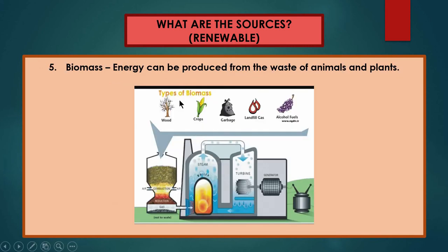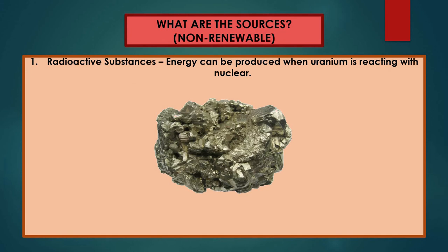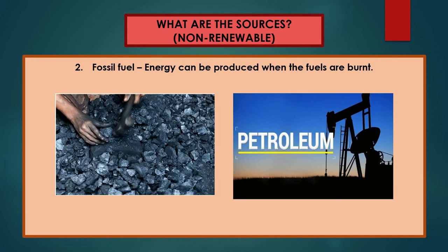Biomass — we can produce energy from the waste of animals and plants with the required machinery to produce the energy you want. For non-renewable sources, the first one is radioactive substances, for example uranium. When uranium undergoes a nuclear reaction it will produce energy. We usually don't use radioactive substances in our houses because they are quite dangerous for humans.